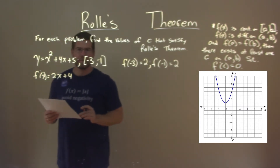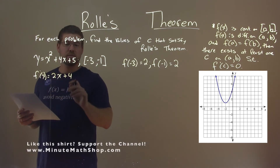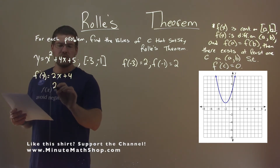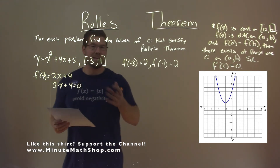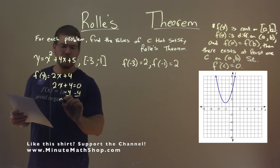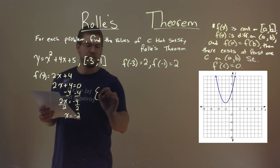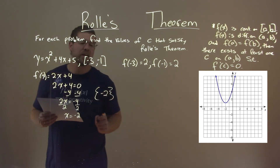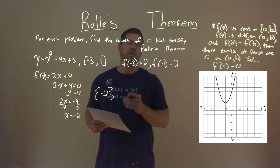Not too bad here. From there, we're applying Rolle's Theorem. We can say f prime of x is equal to 0. We define that value. So we take 2x plus 4, set it equal to 0. Subtract 4 from both sides, we have 2x equals negative 4. Divide both sides by 2, and x equals negative 2. And so our c value here is negative 2, and that is the c value that satisfies Rolle's Theorem.